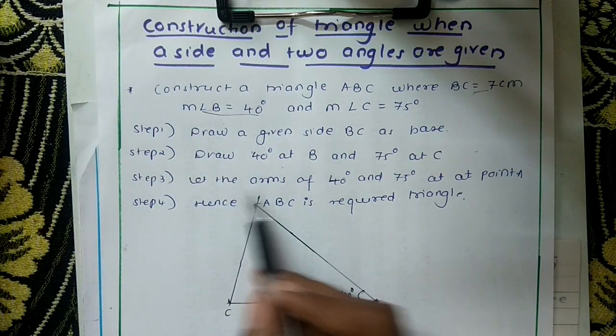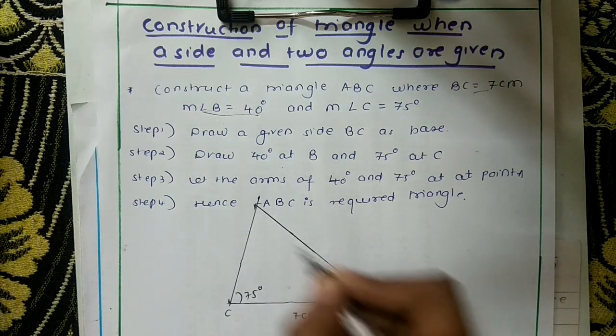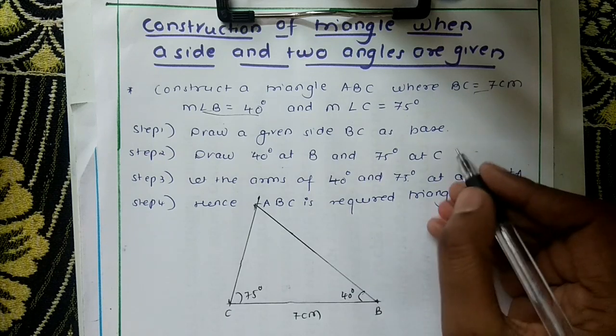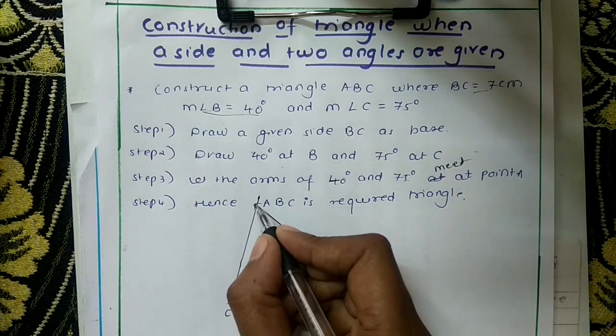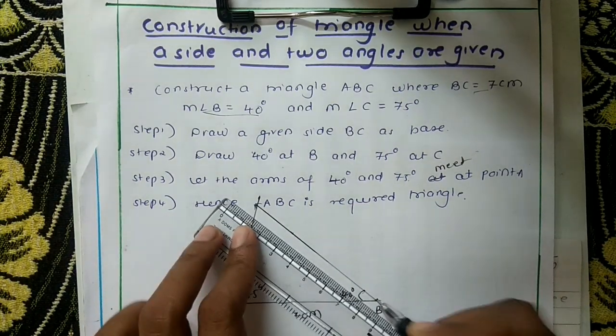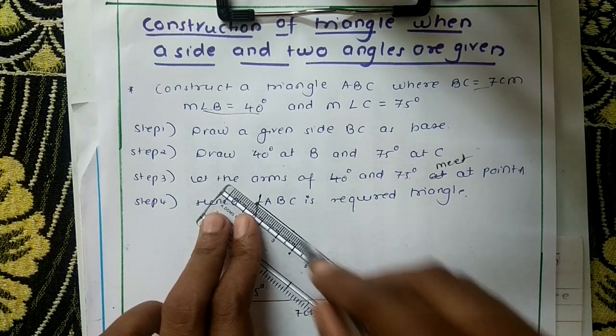Next, the arms of 40 degrees and 75 degrees will meet at point A. Where these two are meeting, suppose you think this is not meeting, this is shortened, so you can extend this as I told you.